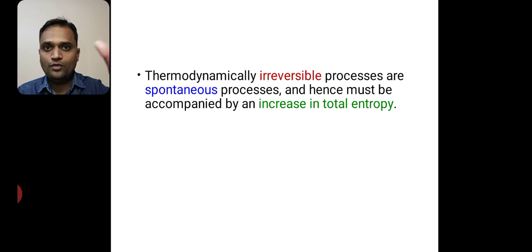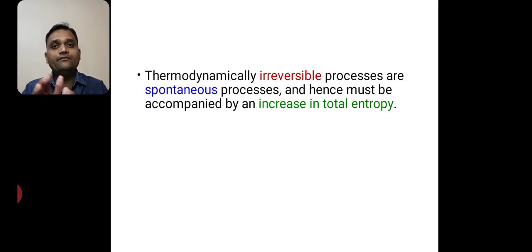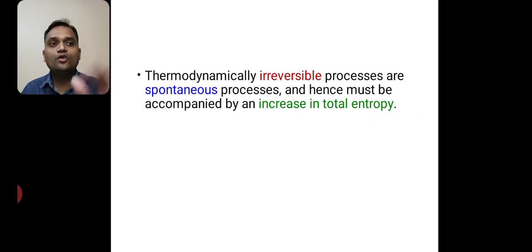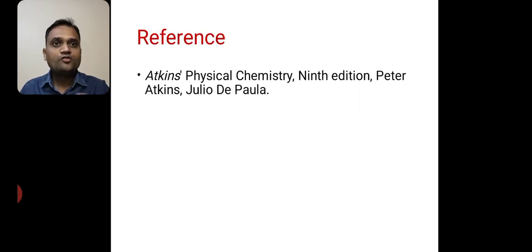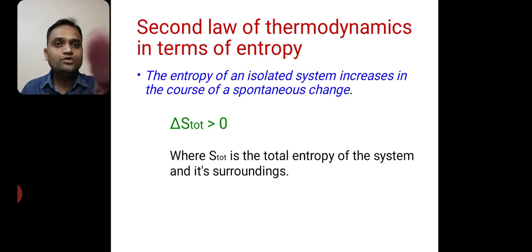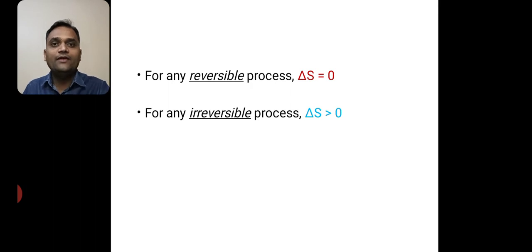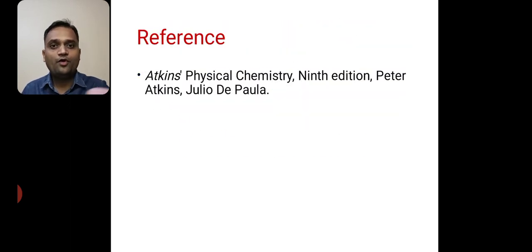When we consider the example of a waterfall, it is an irreversible process and a spontaneous process. When we consider any thermodynamic process, if that process is irreversible, then it is also a spontaneous process, and it must be accompanied by an increase in total entropy because disorder or randomness increases in that system. We have to remember the second law of thermodynamics in terms of entropy, as well as these two points: for any reversible process, delta S is equal to 0; and for an irreversible process, delta S is greater than 0. Thank you.